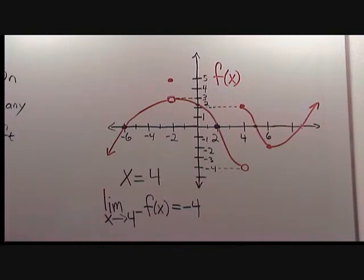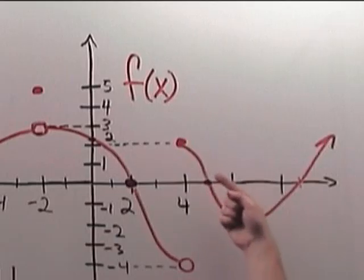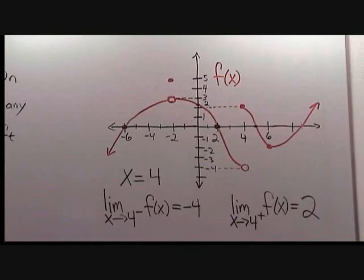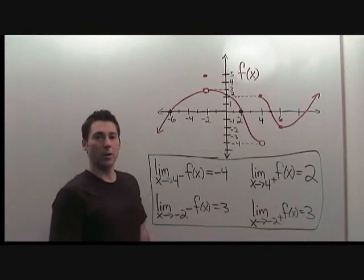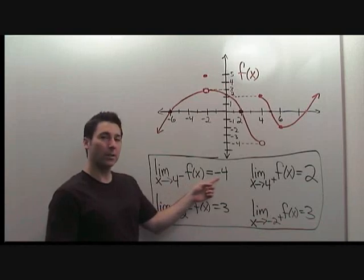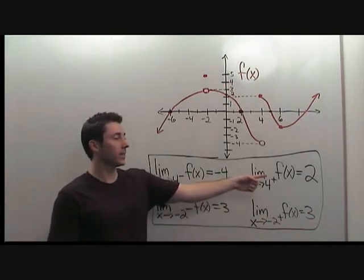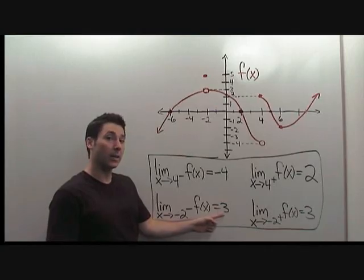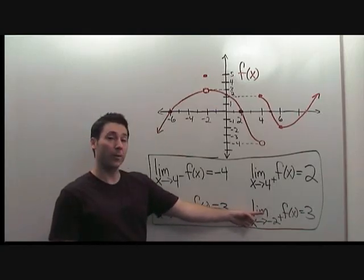Now let's do the limit from the right. We walk along the graph as x approaches 4 from the right and when we get to x equals 4, we record the y value which is 2. The limit as x approaches 4 from the right of f of x is equal to 2. We conclude with our four limits: the limit as x approaches 4 from the left is negative 4, and as x approaches 4 from the right is 2. The limit as x approaches negative 2 from the left is 3, and also as x approaches negative 2 from the right is 3.